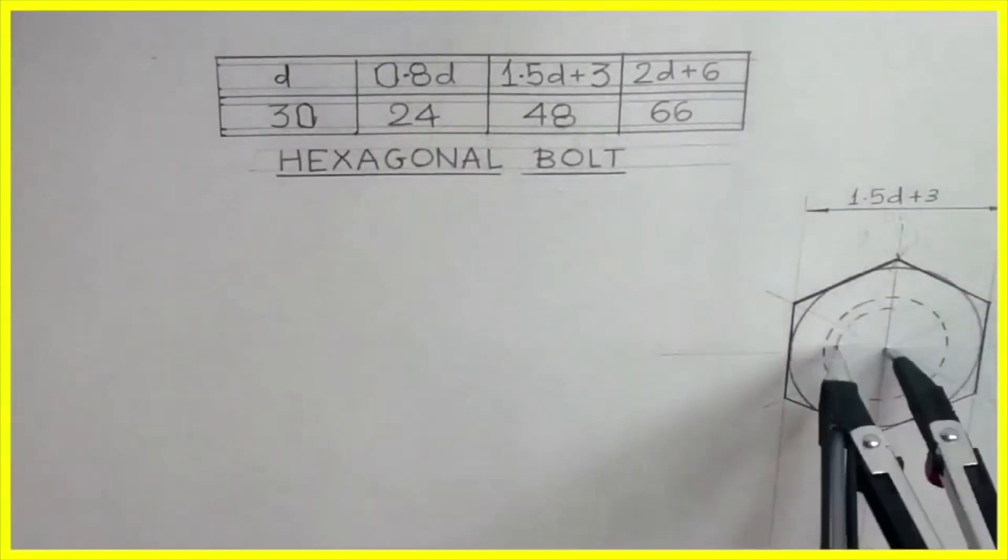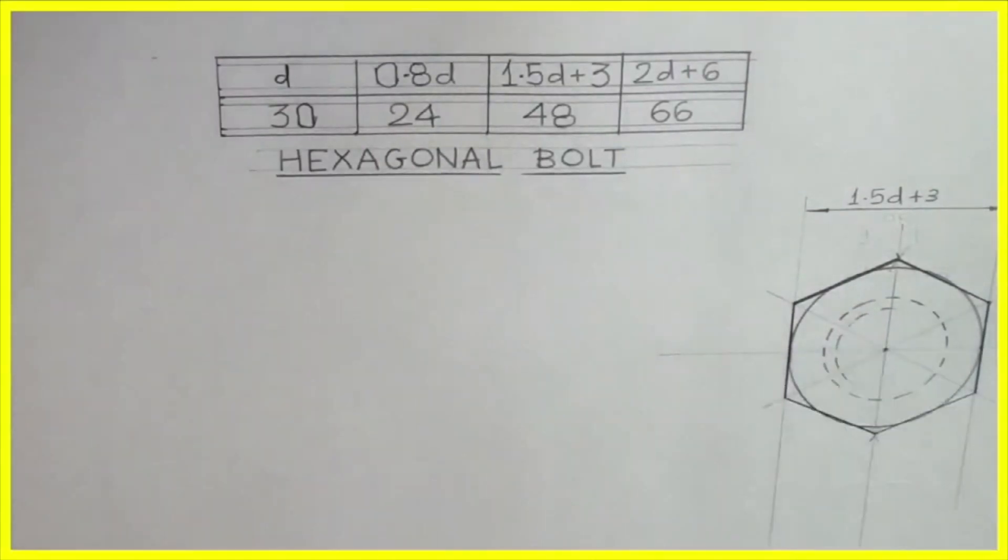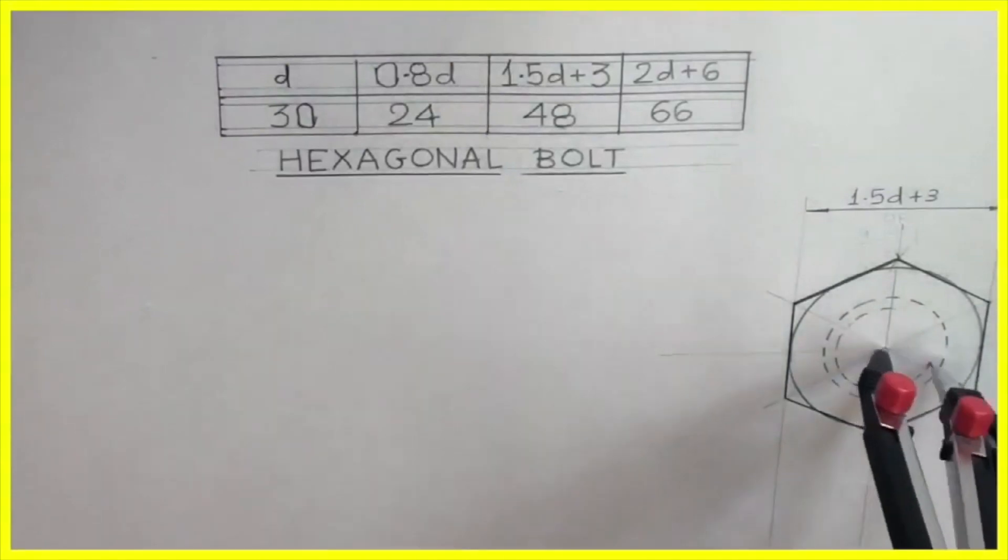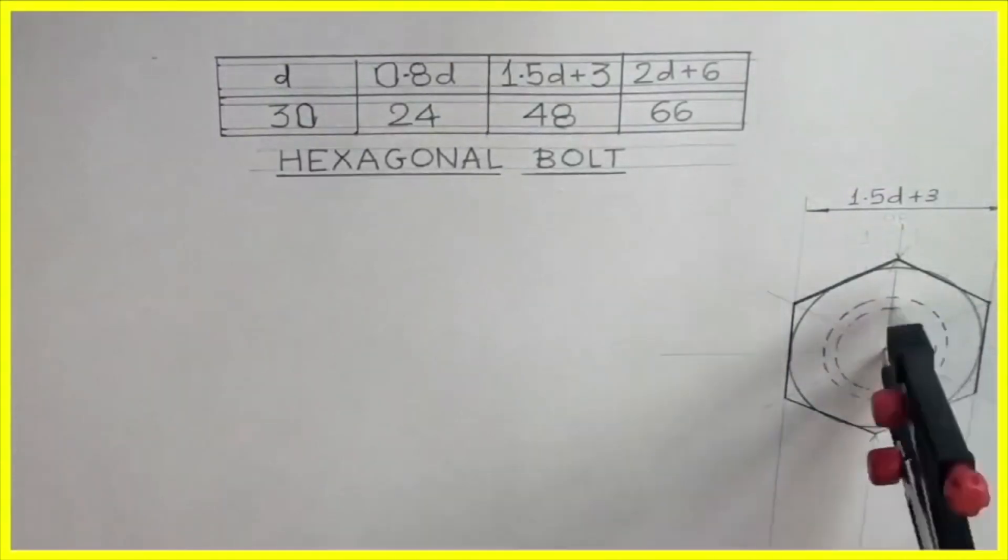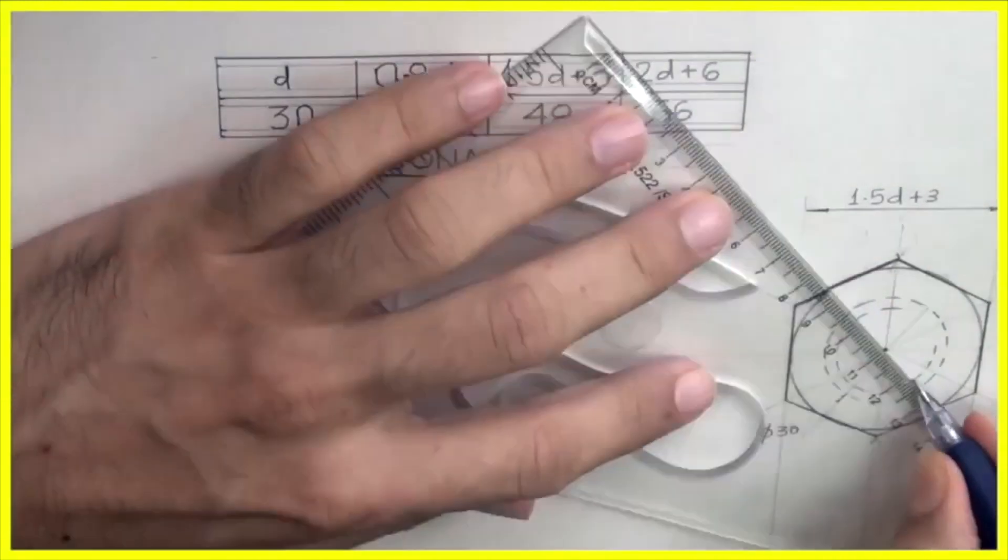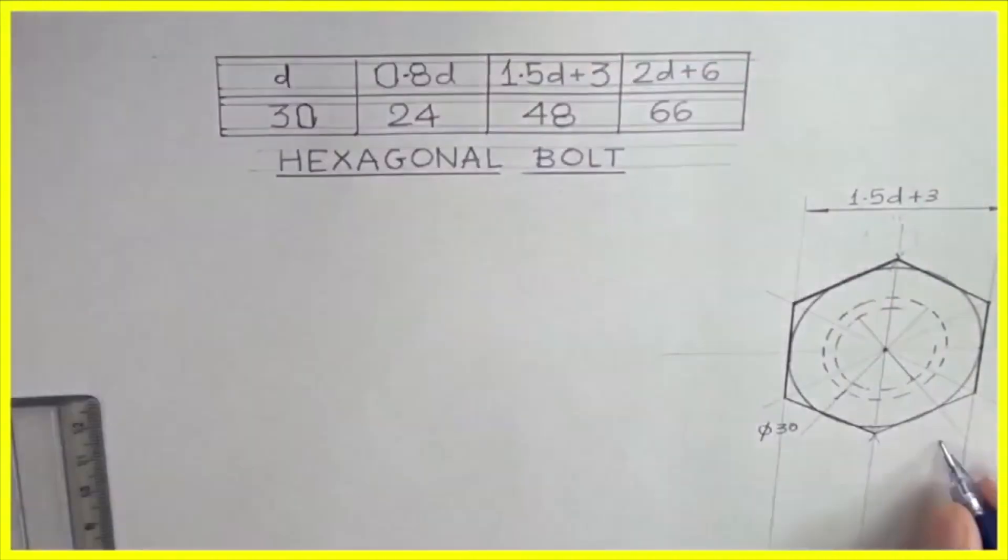Then we will take 24 and draw three-fourths. Always remember the blank space will always be in the first quadrant because we are doing it in first quadrant, following first angle method. We can write diameter 30 and 24.